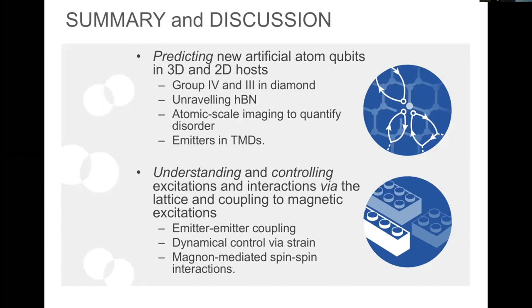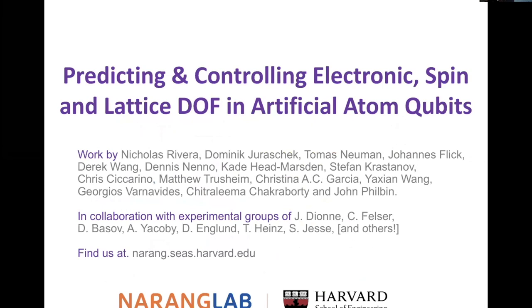So I'll summarize and say, told you about predicting new artificial atom qubits, both in 3D and 2D hosts, in the group 4 and group 3 in diamond, how we've thought about hexagonal boron nitride, various ways to intersect with atomic scale imaging to quantify effects in these systems. And second half, I told you about how you can get emitter-emitter coupling, how you can use dynamical controls, using a strain field, or if you're really fancy with these magnon-mediated spin-spin interactions. So thanks to funding. And to wonderful people I've worked with, happy to take any and all questions. And thank you again, Dana and James, for having me here.